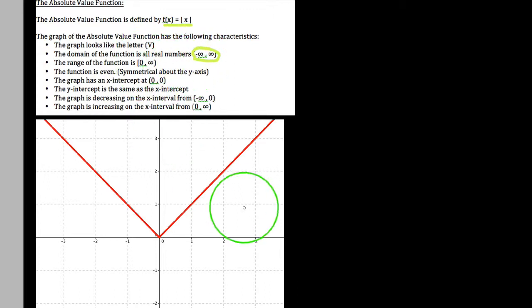In terms of range though, notice it doesn't hit all of the heights. It starts at a height of zero and proceeds to go up forever and ever, but it does include the height of zero. So the range of the function is starting at zero, closed bracket zero, and then goes up to infinity with an open bracket. We use a closed bracket to indicate that it does actually reach a height of zero.